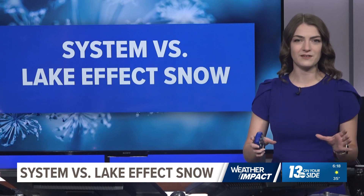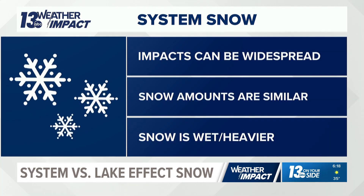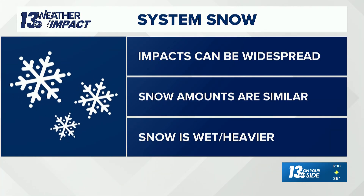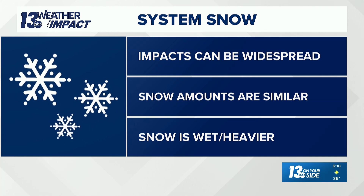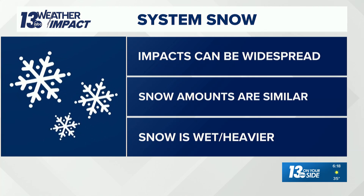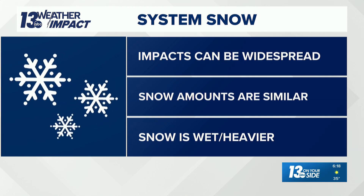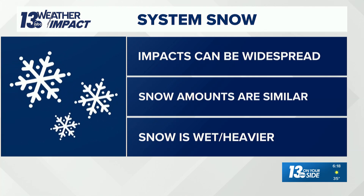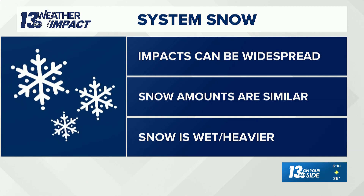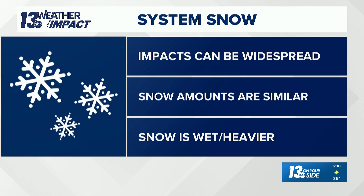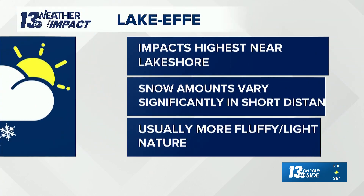These two types are quite different. When talking about system snow, it's tied to a low pressure system moving in. That's when we expect impacts to be widespread and also a bit more consistent across the region. Snow totals would be fairly similar across the area, and system snow would also be wetter than what we end up seeing with lake effect snow instead.